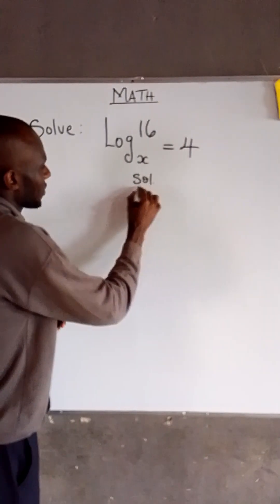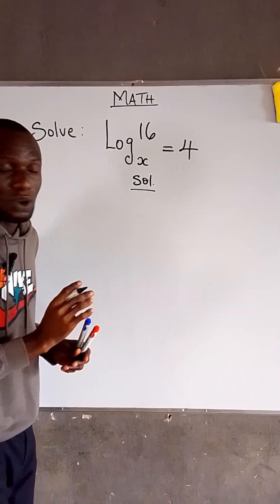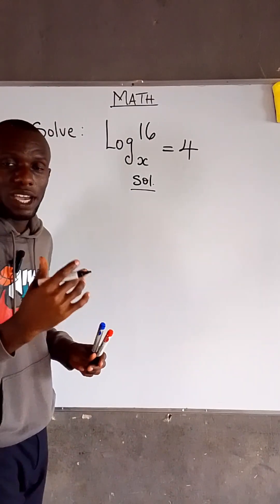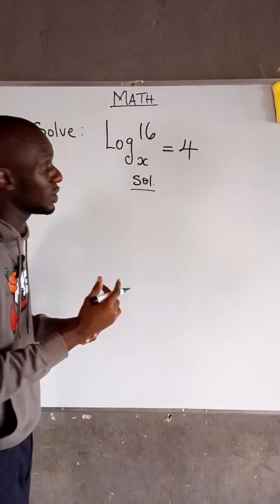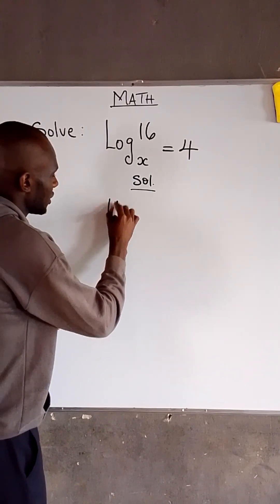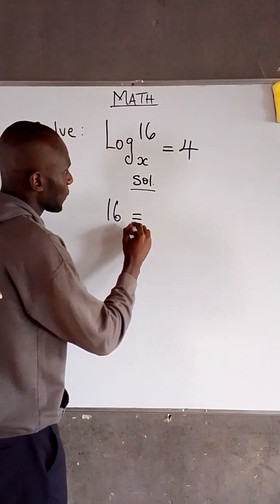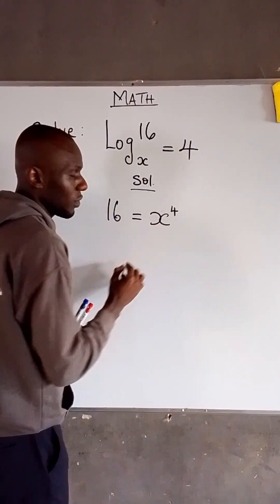So, for us to achieve this, we have to recall the relation between indices and logarithms. This becomes 16 equal to x to the power of 4.